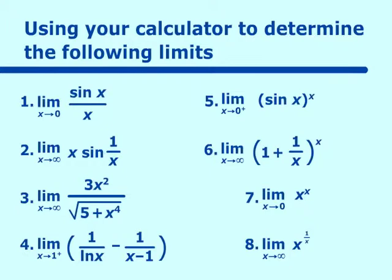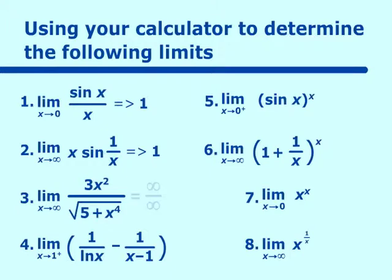Here is the list of limits you had, along with their answers. The first one equals zero over zero, and when you evaluated the limit, you got an answer of one — that's an indeterminate form, zero over zero. The second one equals infinity times zero, also an indeterminate form, and the answer should have been one. The third one is infinity over infinity, again an indeterminate form, and the answer should have been three.